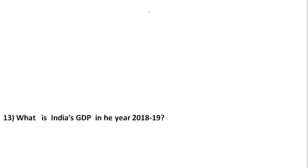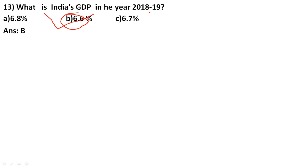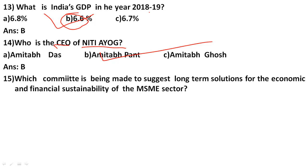India's GDP in the year 2018-19 is 6.6 percent — remember this, it's very important. Next, the CEO of NITI Aayog — the full form is National Institution for Transforming India. The options are Amitav Das, Amitav Kant, and Amitav Ghosh. The correct answer is option B: Amitav Kant.